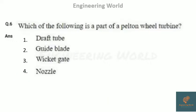The next question: which of the following is a part of a Pelton wheel turbine? Options are draft tube, guide blade, wicket gate, and nozzle. The answer is nozzle — it is a part of the Pelton wheel turbine.